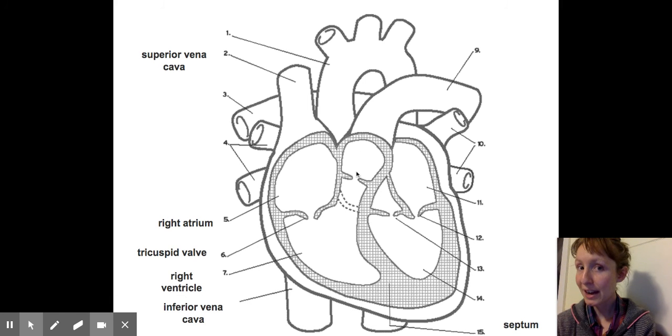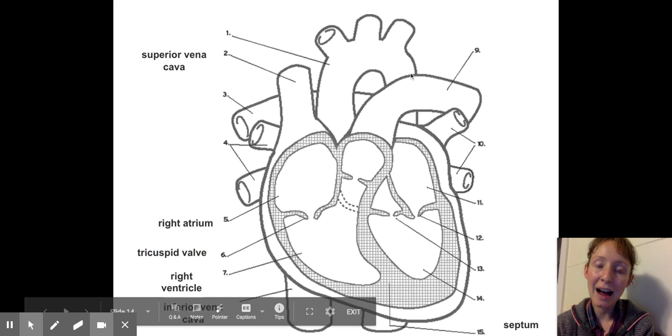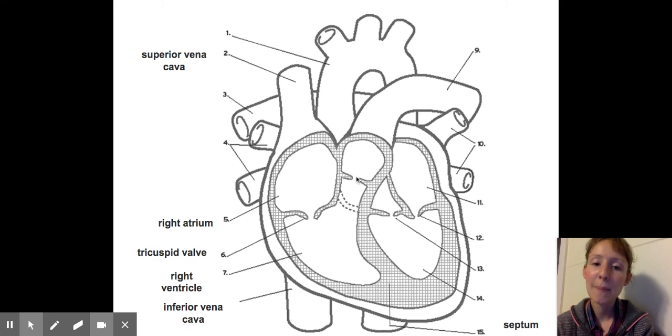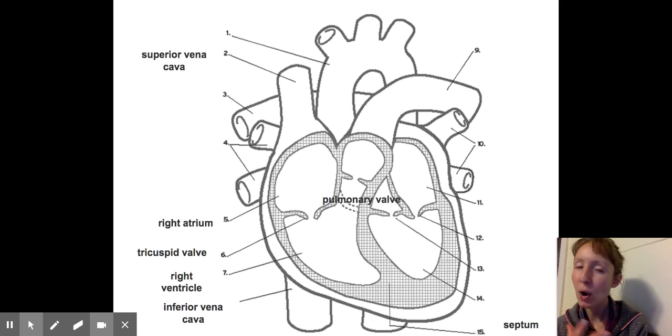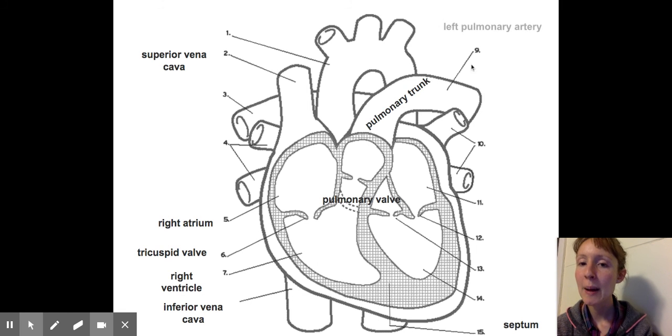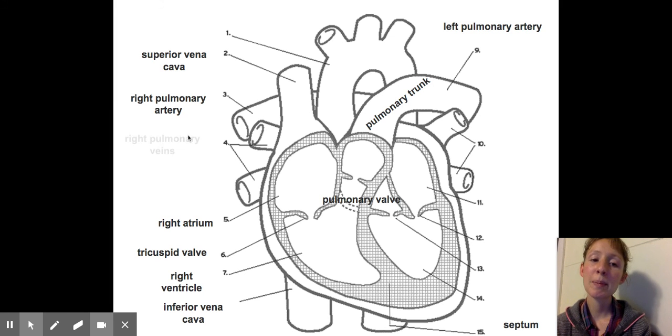Now, this is not labeled in your diagram, but I do want you to label it. It doesn't have a number, but let's label it. So the valve that is right here, where the blood is going from the ventricle out towards the lungs is going to be the pulmonary valve. Pulmo means like of the lungs. So basically the blood comes in from the body deoxygenated and the heart pumps it towards the lungs, out to the pulmonary trunk and out the pulmonary artery. It's leaving the heart, so it's an artery.